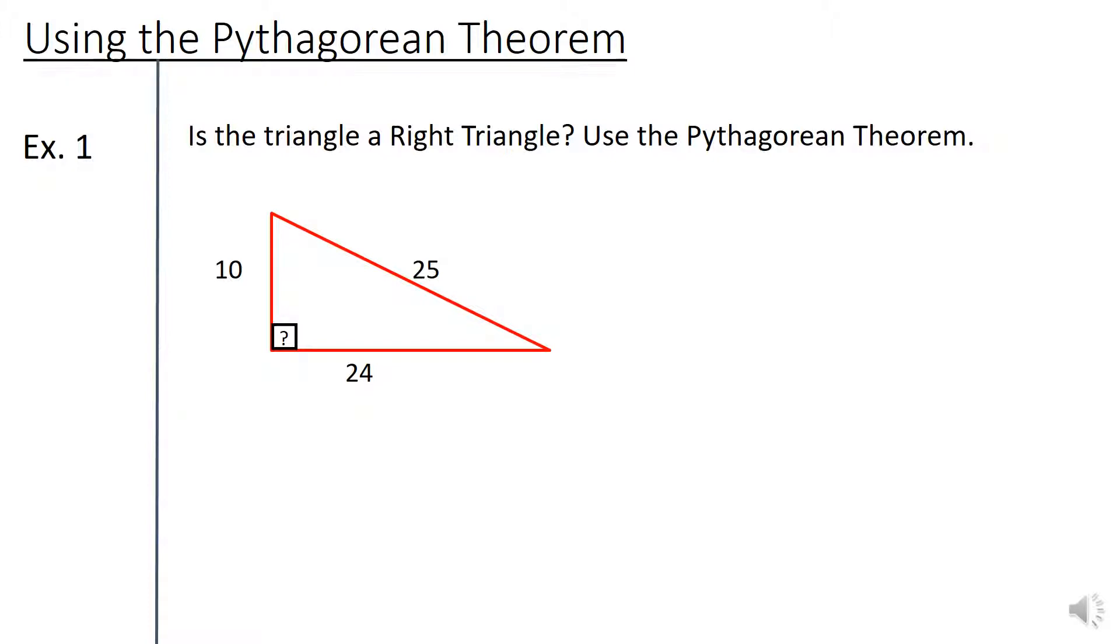And why would that matter? I don't know. Maybe these numbers represent the lengths of a skateboard ramp. Oh, hold on buddy. So it would be important for us to know if that really is a solid perpendicular angle there holding up the ramp. Let's figure that out by using the Pythagorean Theorem.